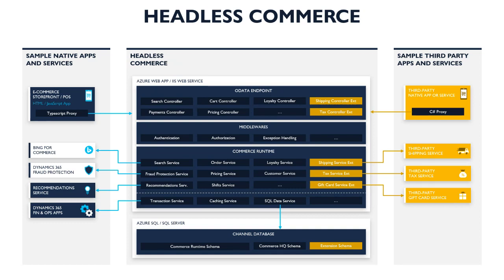From the extensibility point, all services inside the CRT are extensible. For example, if you want to customize the tax flow, there's a calculate tax service request you can override and add your custom logic, such as integrating with a third-party tax service. Or for shipping integration, you can override the shipping service to call FedEx or UPS for charges and shipping labels. On the database layer, there's an extension schema where you can create custom tables, procedures, and views. On the retail server, you can also create a completely new web API to expose new functionality.